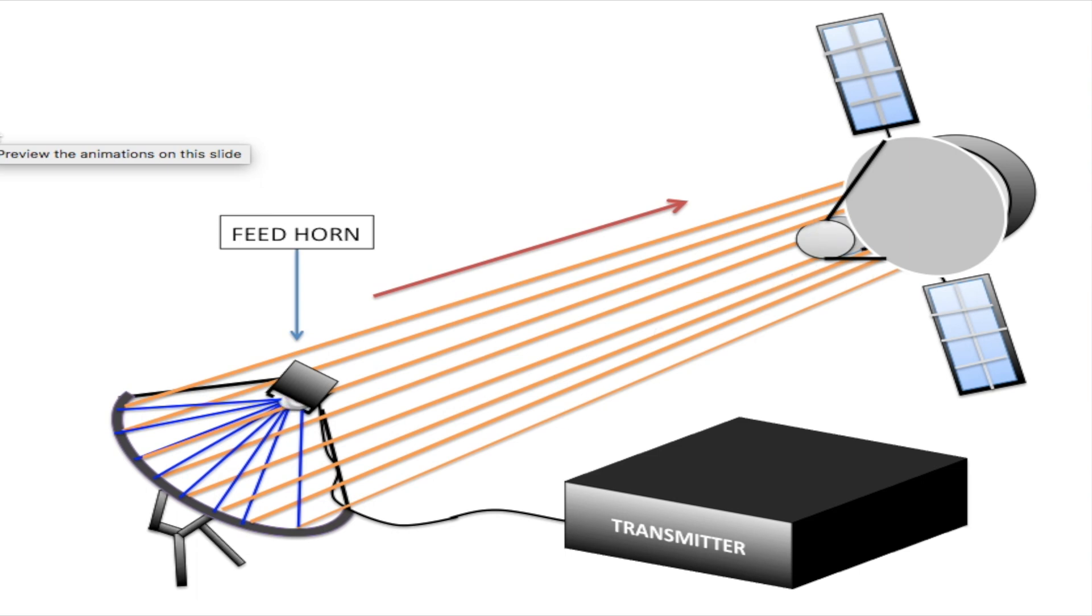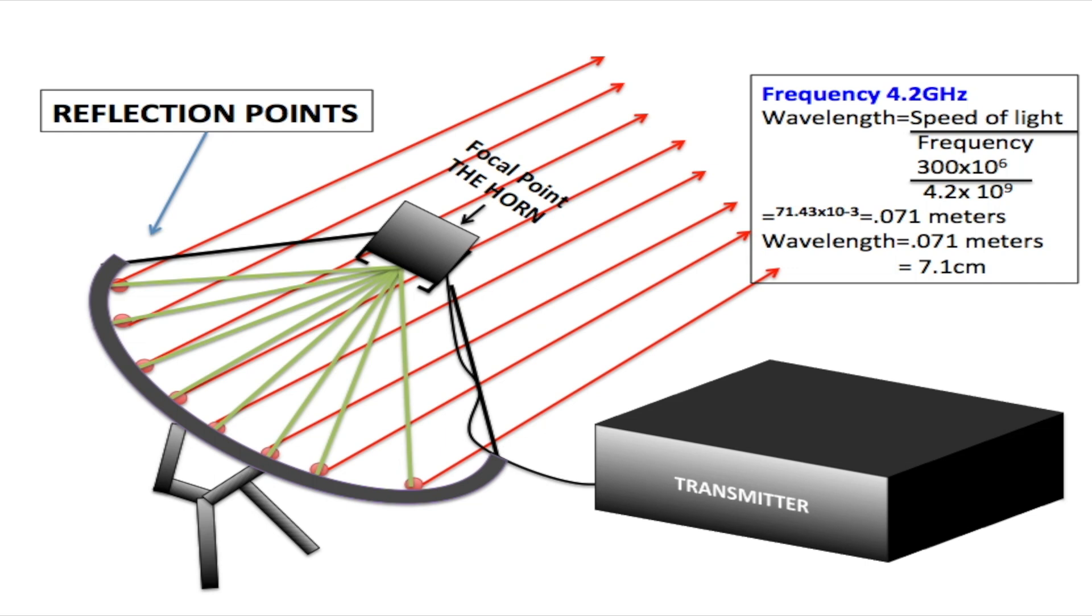Signals being sent from the parabolic antenna are first sent from the transmitter to the feed horn where they are converted from an electrical signal to an electromagnetic signal and sent towards the parabolic dish where they are reflected as beams into space.